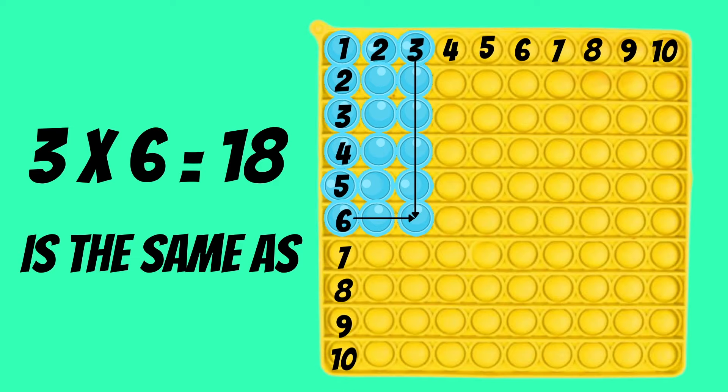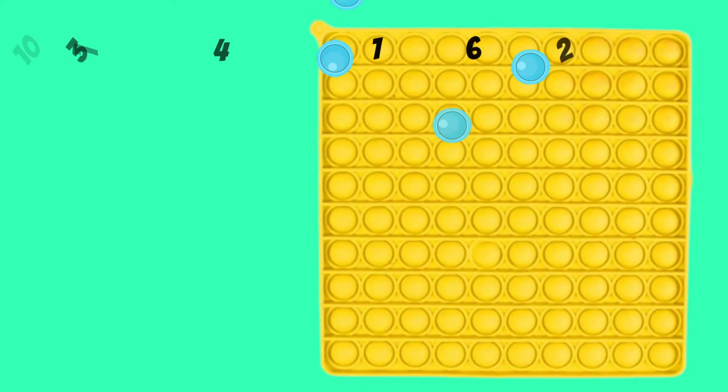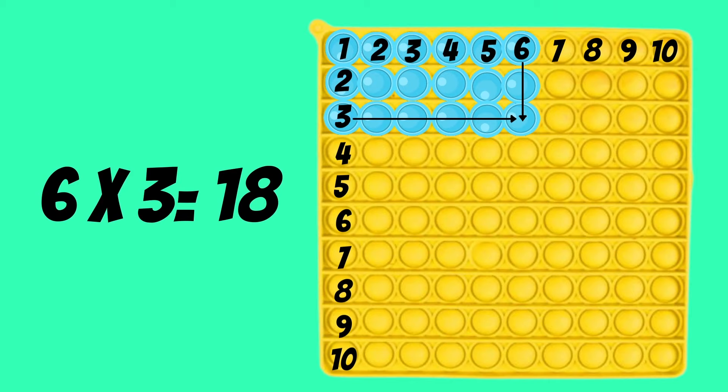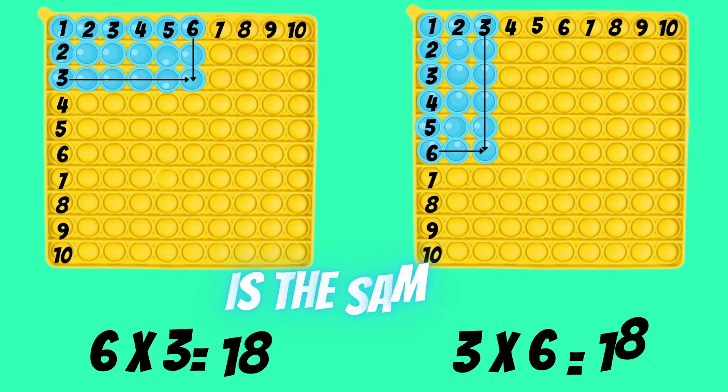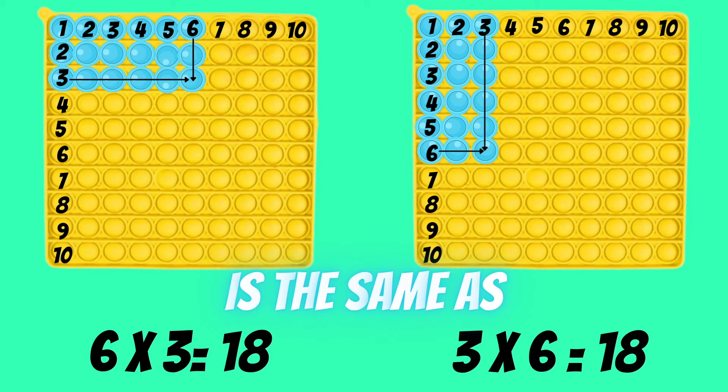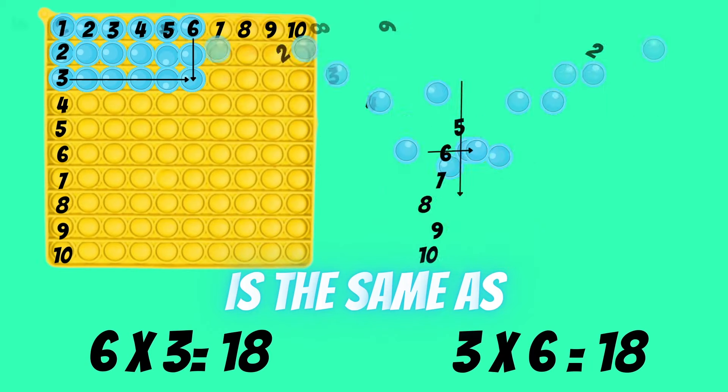3 times 6 is the same thing as 6 times 3. And you can see here, the rectangle of the blue bubbles is the same shape. It has the same amount of bubbles. In other words, 6 times 3 equals 18 is the same thing as 3 times 6, which equals 18.